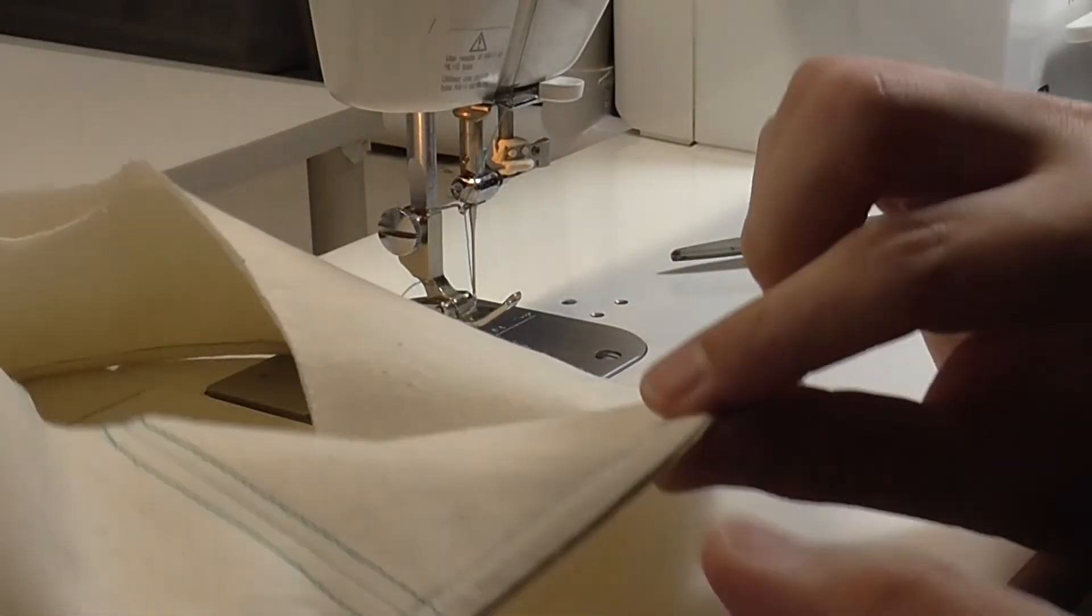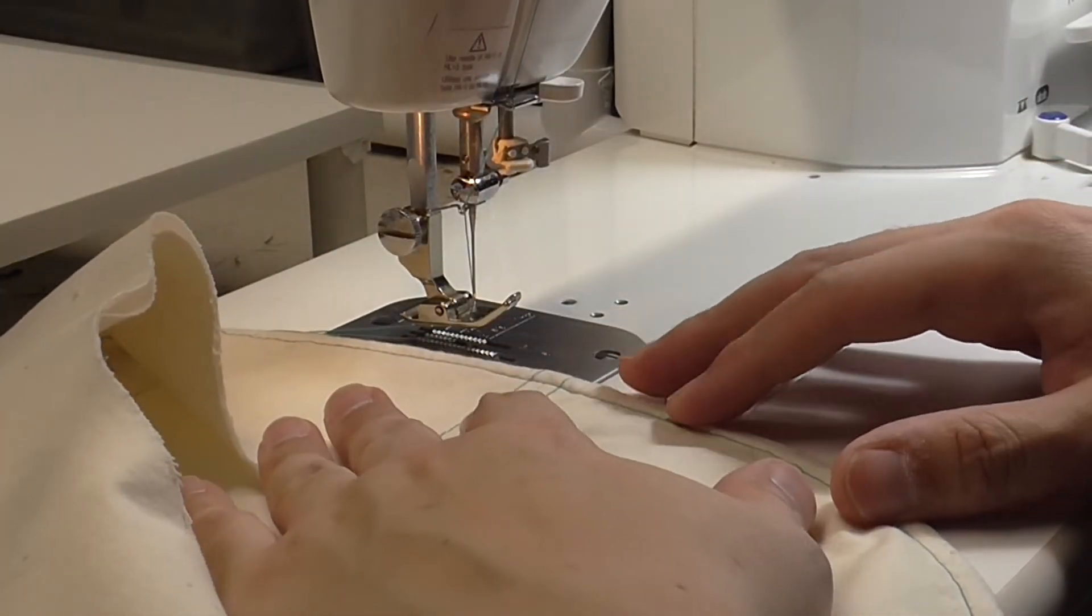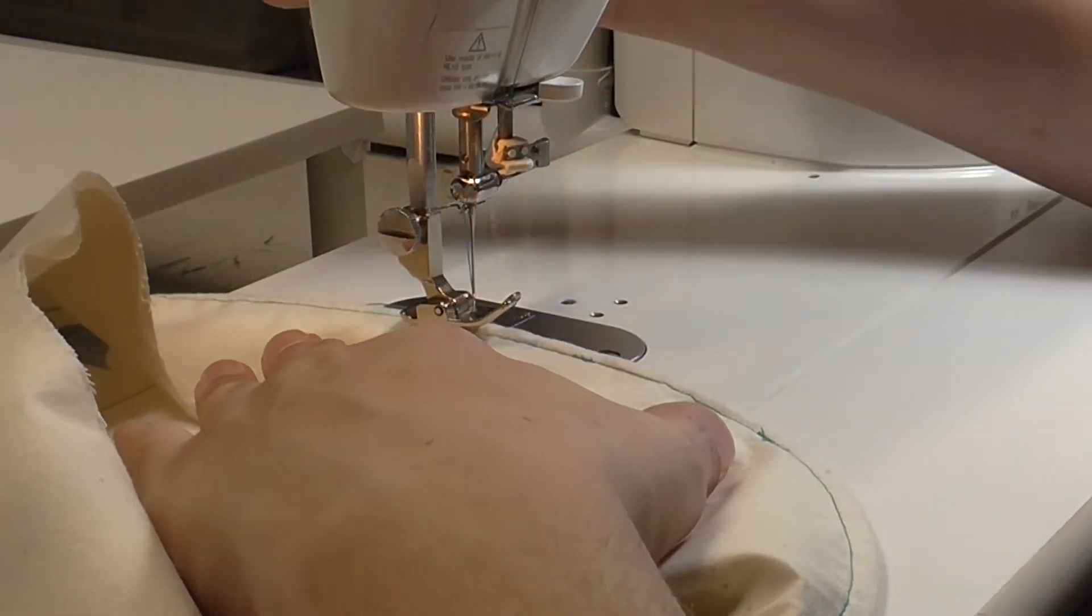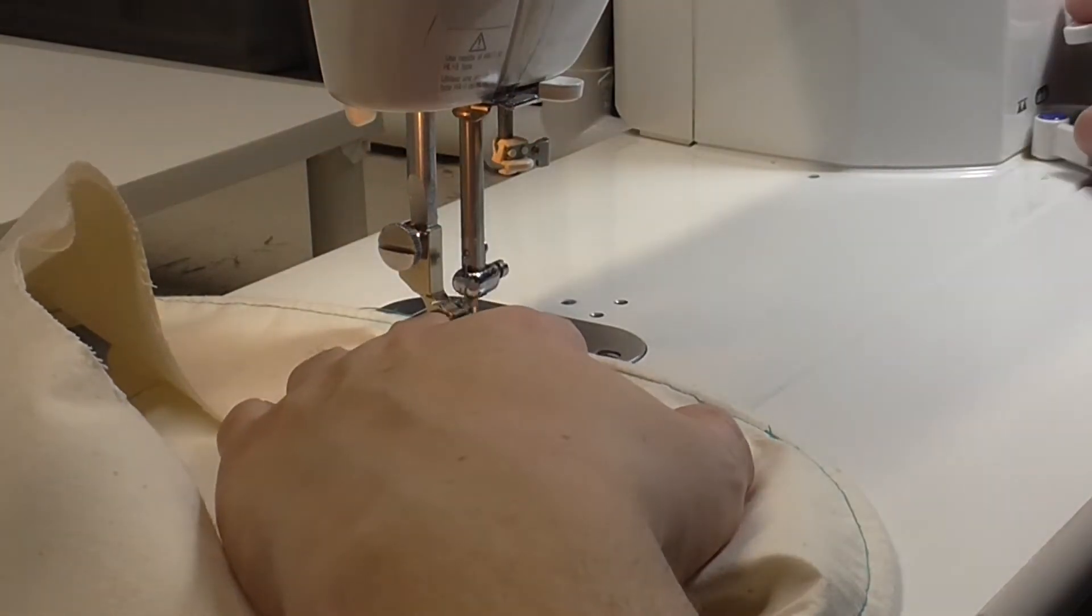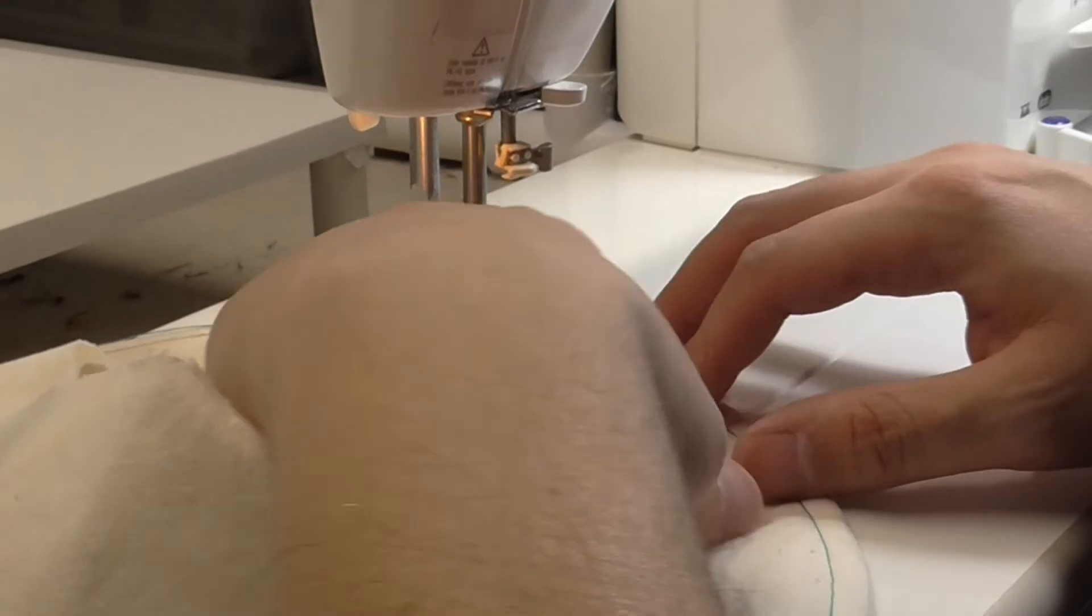Once you've completed the stitching, the wire is now secure on the outside edge. At this point, you can do any channel stitching that you want on the brim. Follow the instructions in the provided link to the bucket hat construction video for more information on this stitching.